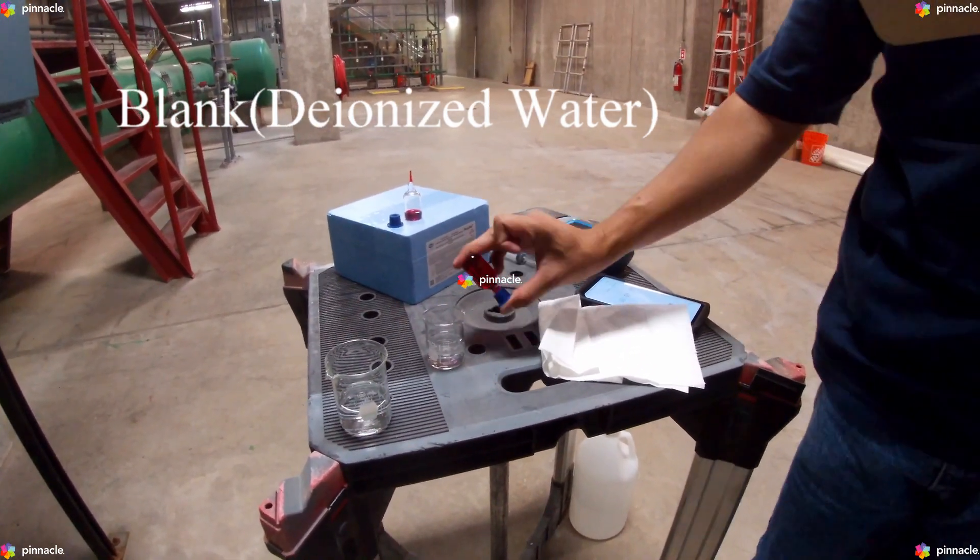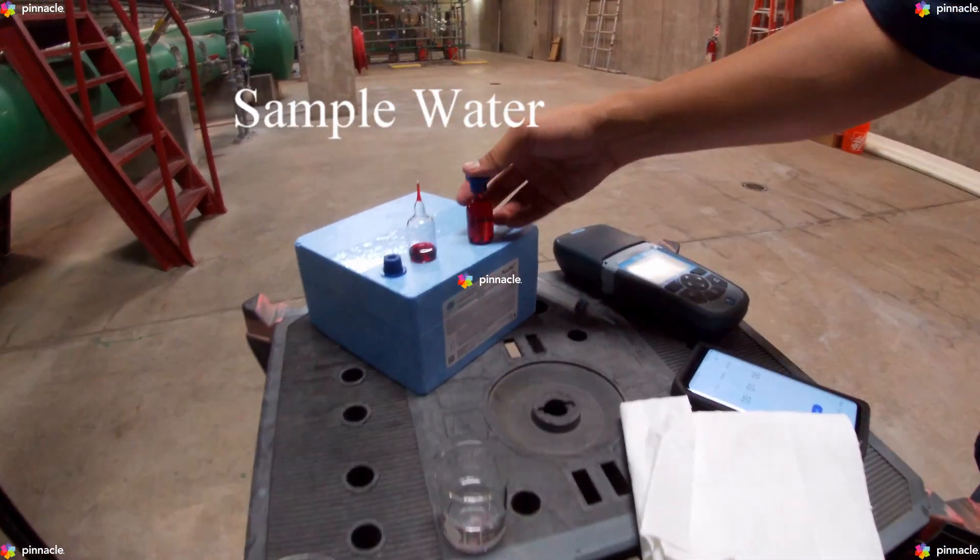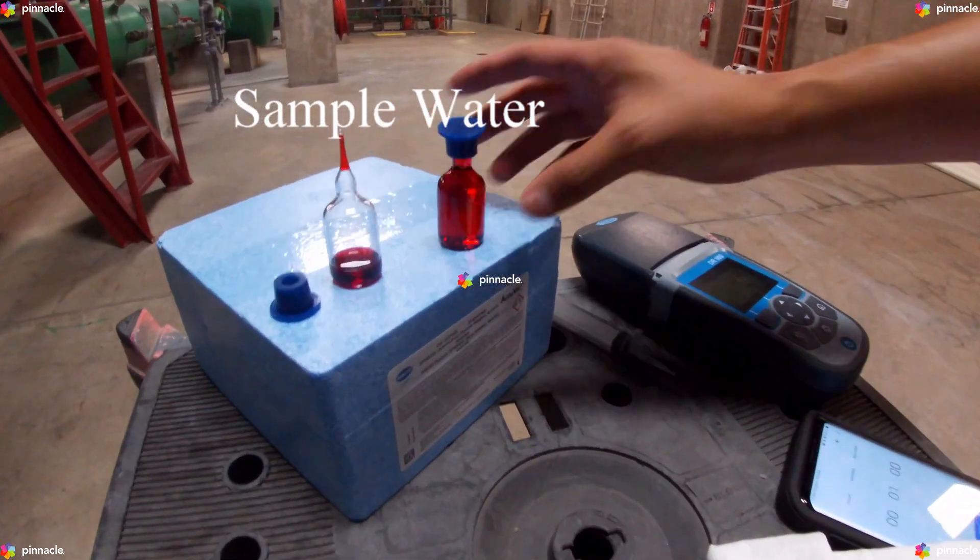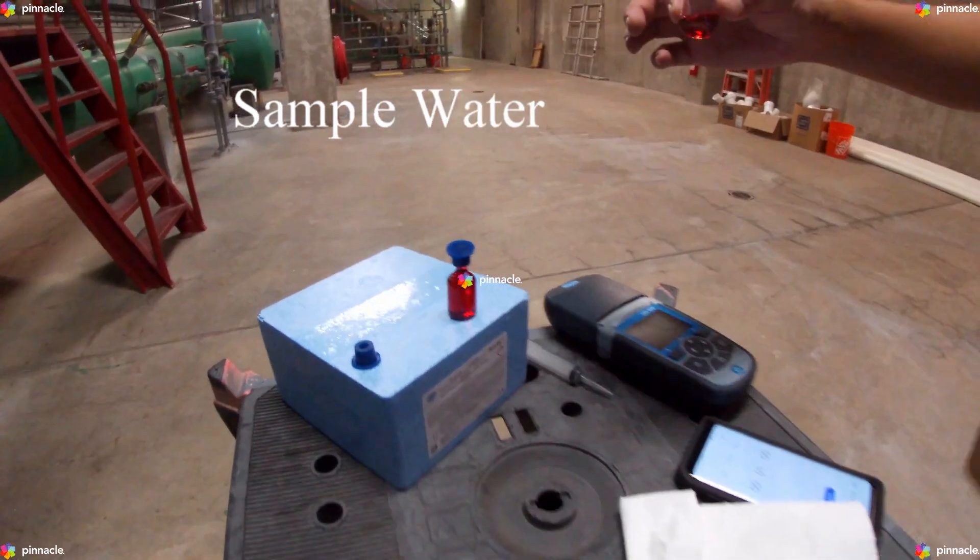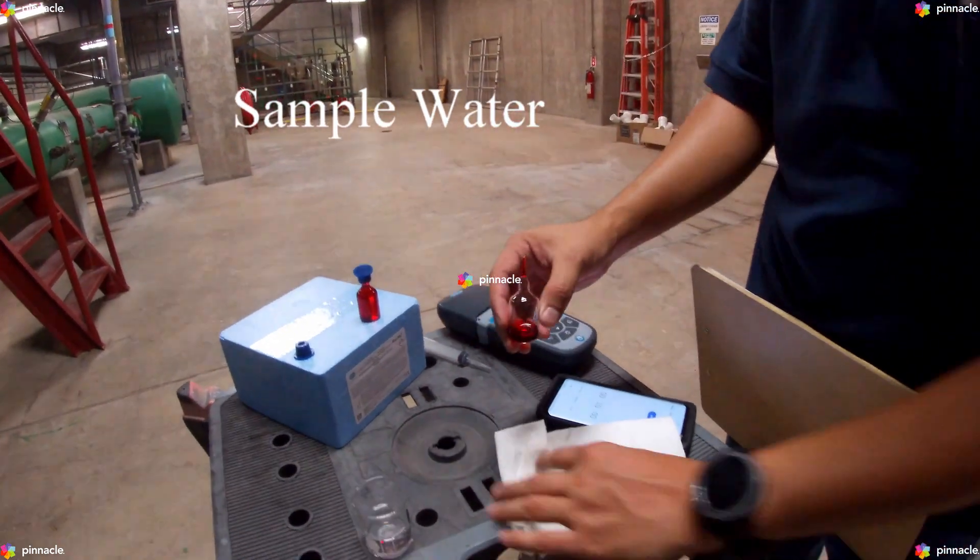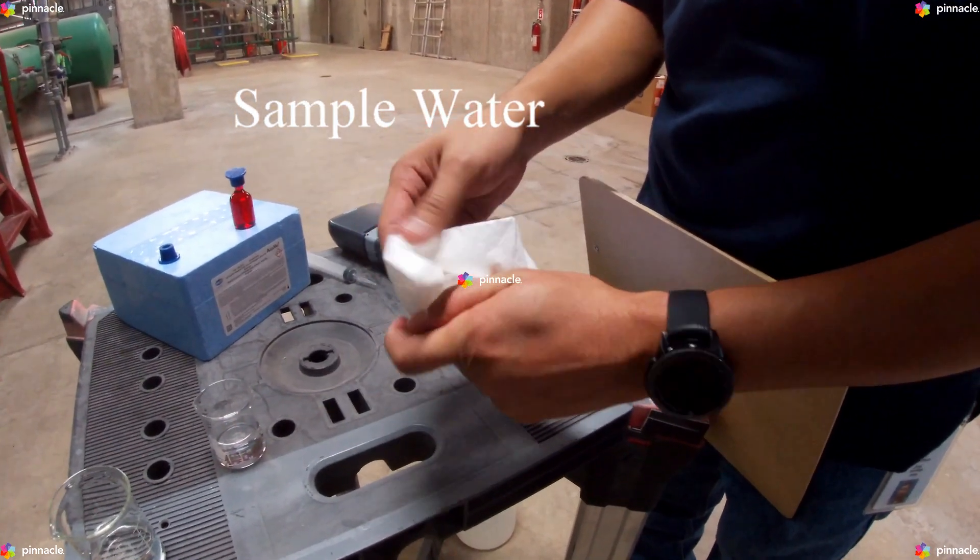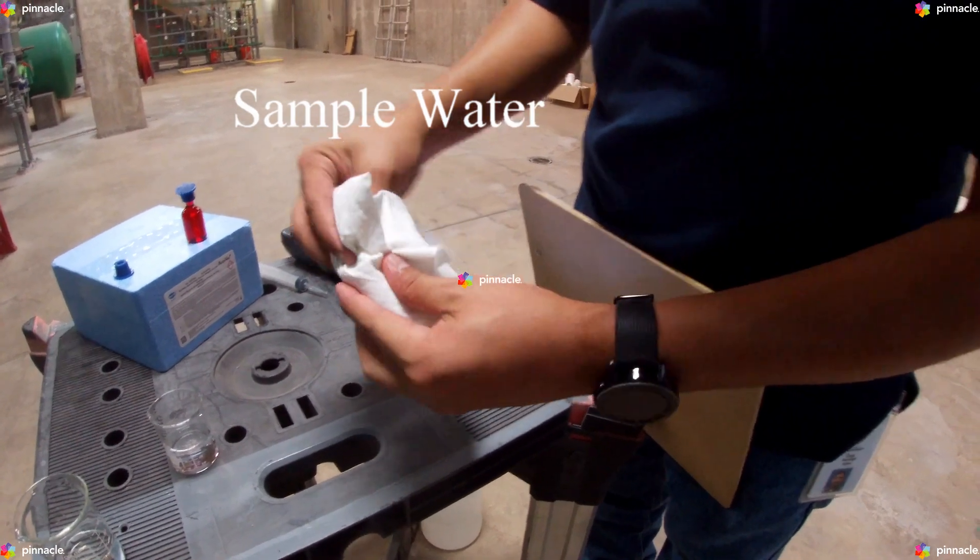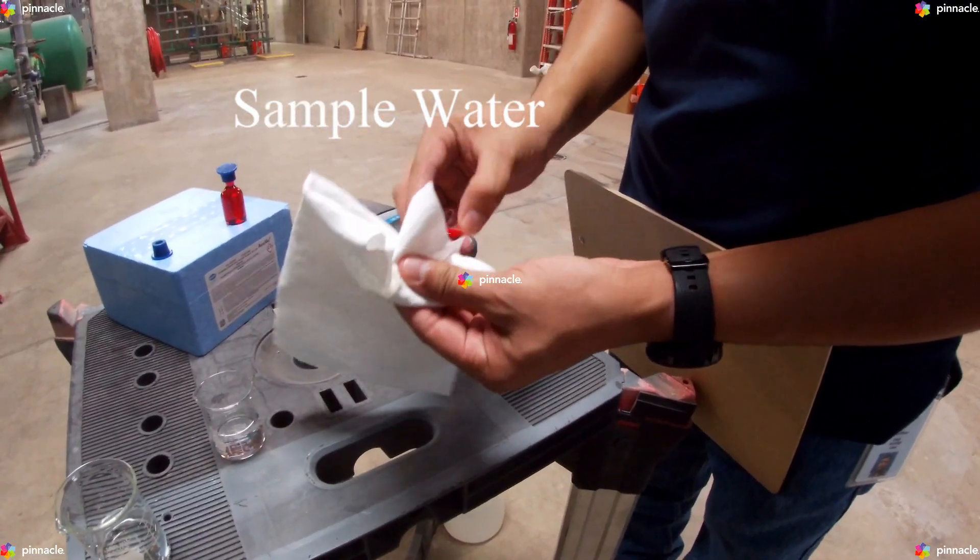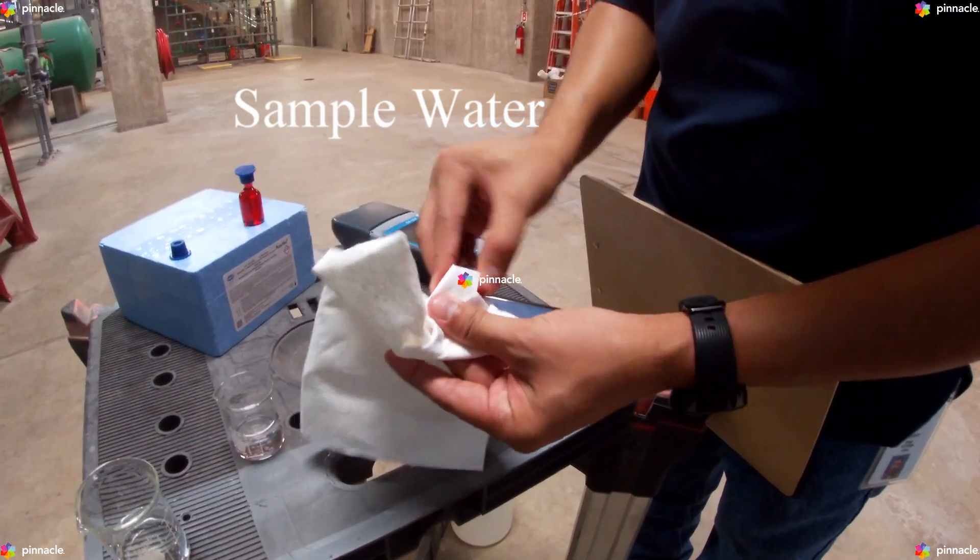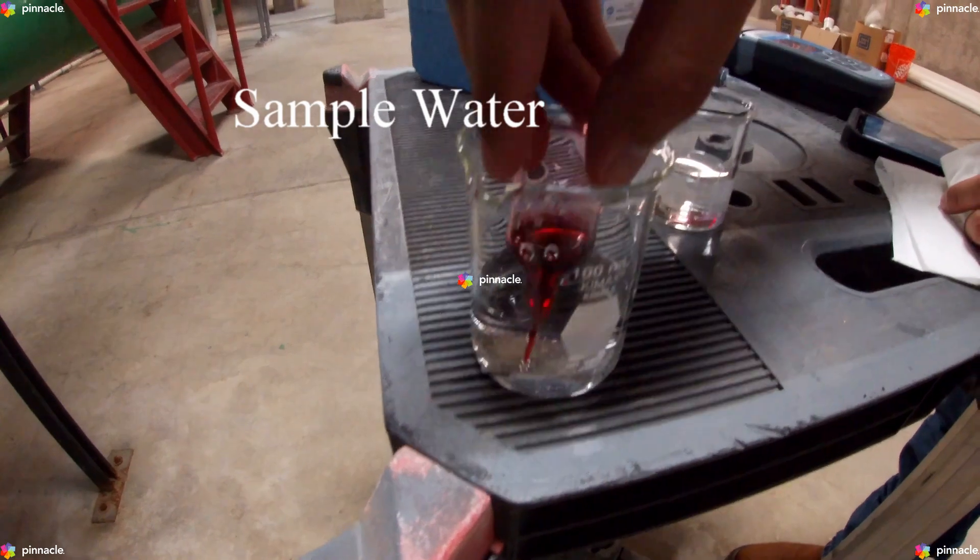Next, we will grab our second AccuVac Ampoule and make sure to clean the tip thoroughly before submerging into our sample beaker. We will keep the tip immersed while the AccuVac Ampoule fills completely.